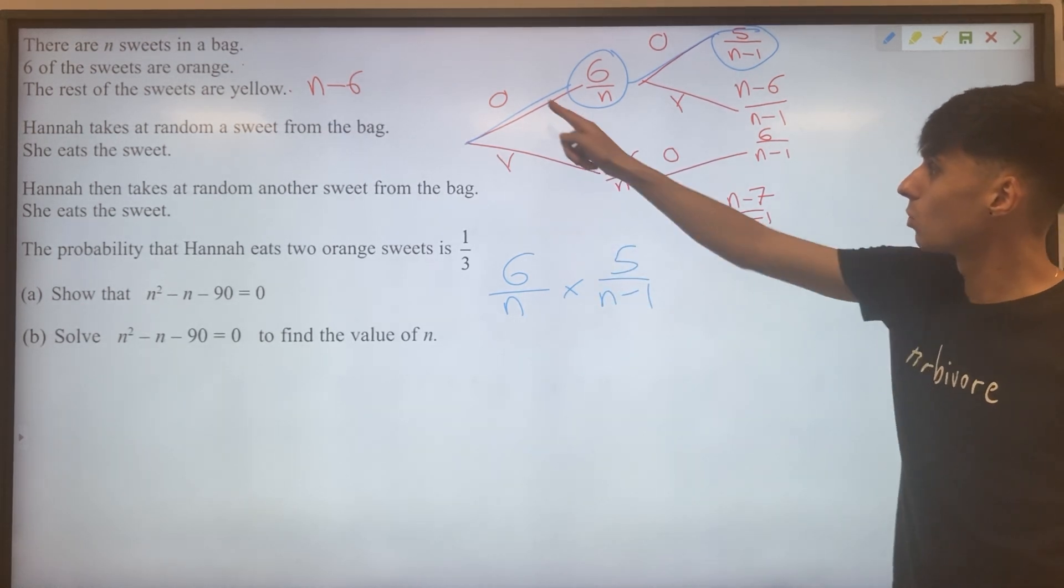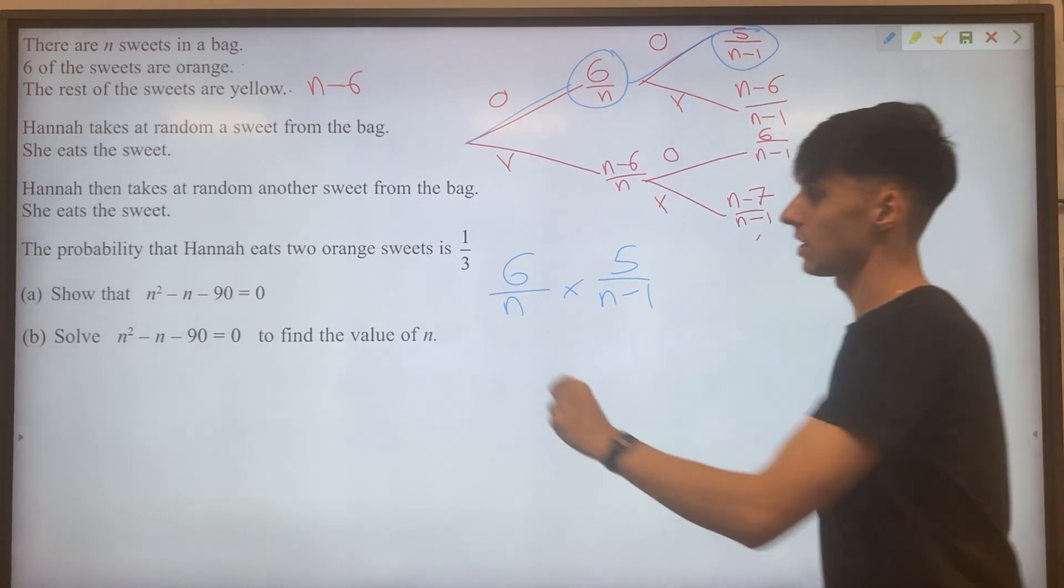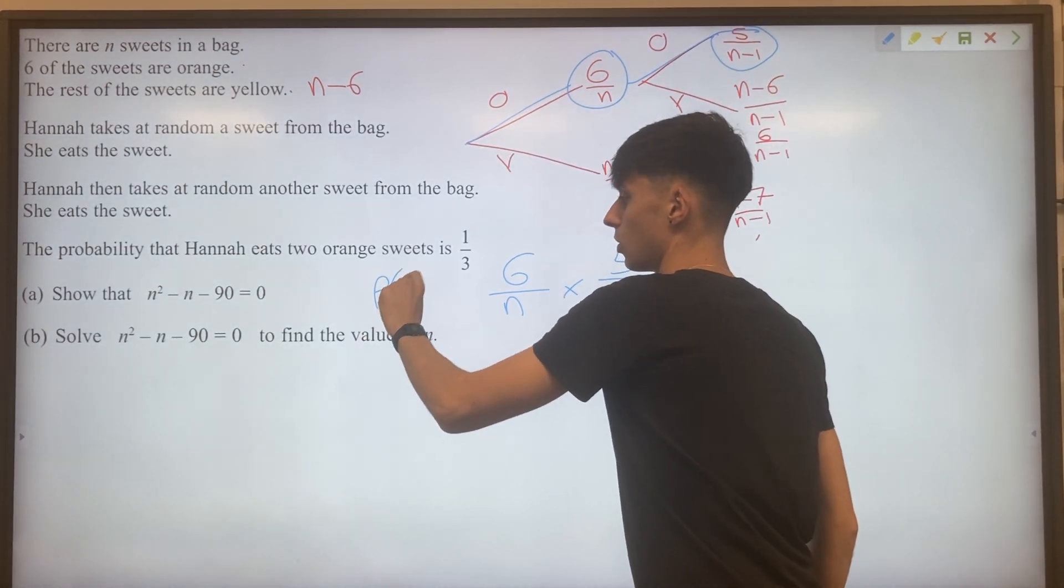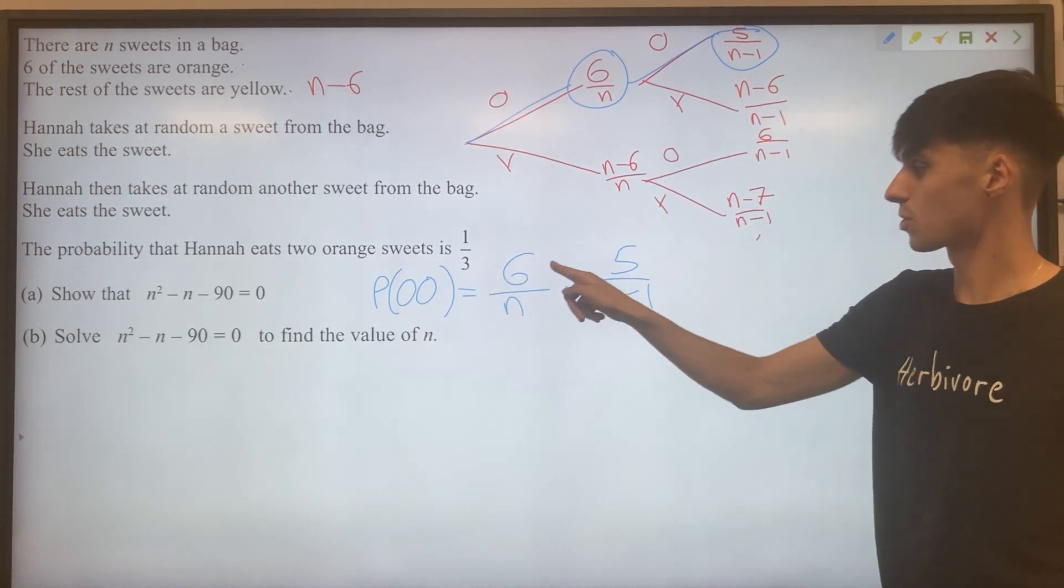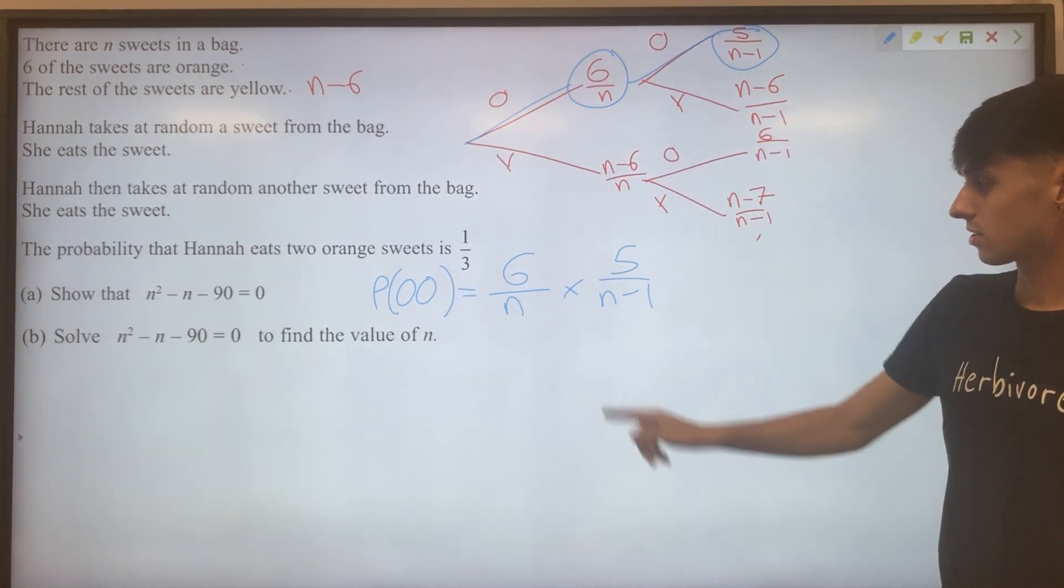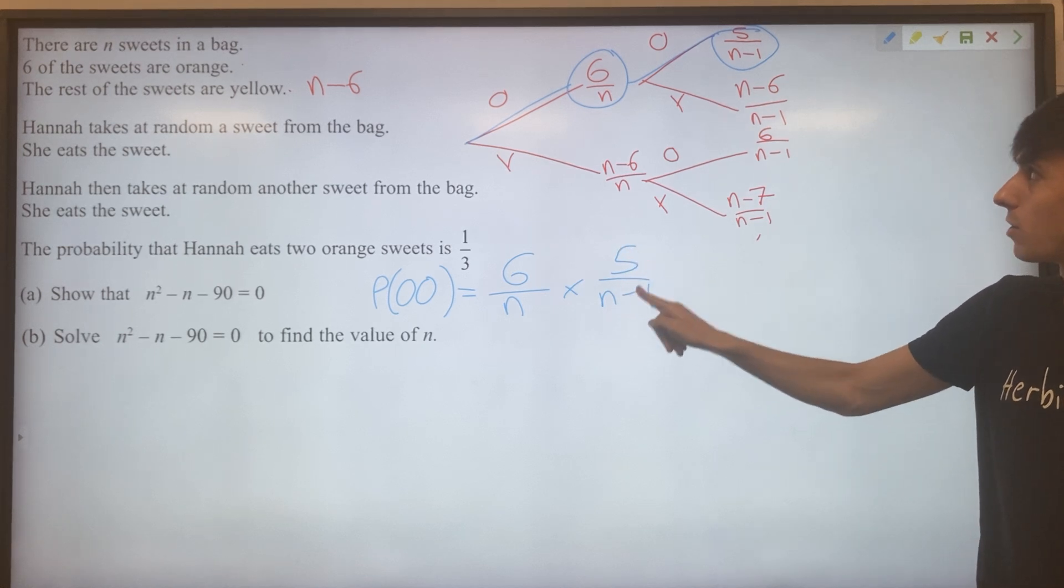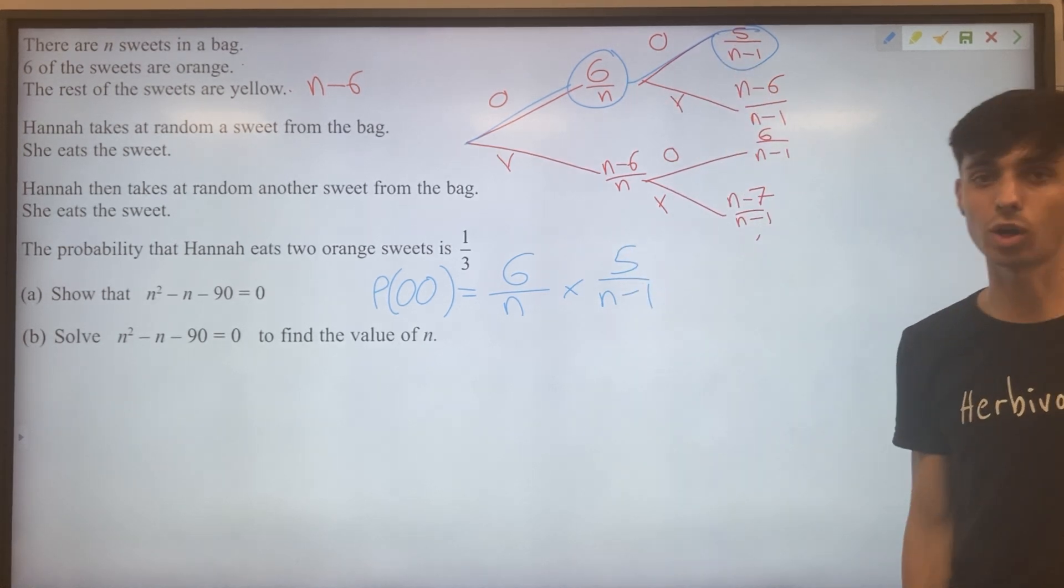And we should be really clear what we've stated here. This is the probability of orange orange: six over N multiplied by five over N minus one, as we go along our tree.